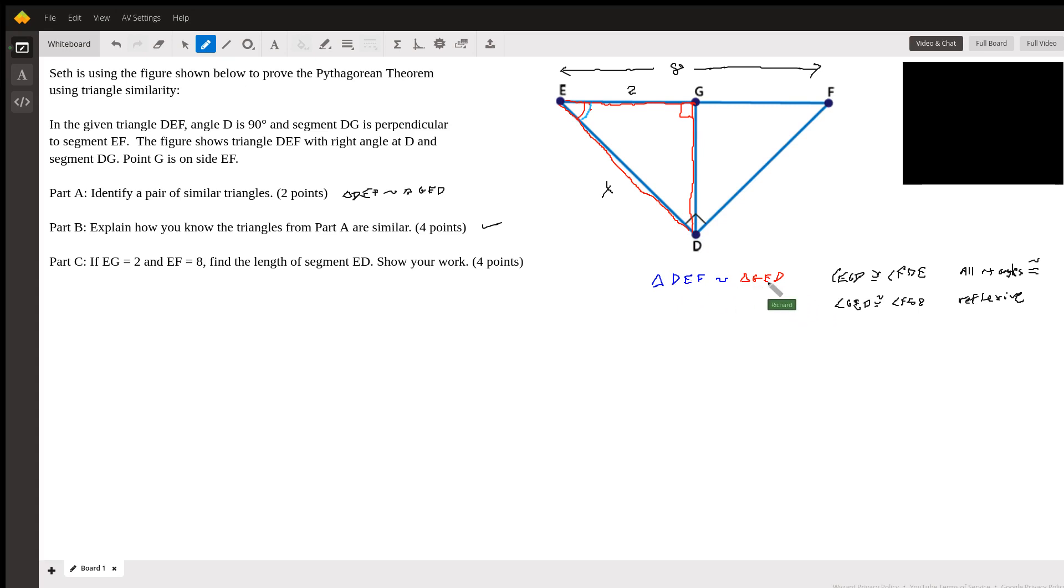You can see that the two triangles, the blue and the red, share an angle E. So this angle E is congruent with itself—that's reflexive. And then you can see this right angle here on the red triangle is going to be congruent to the right angle on the blue triangle.